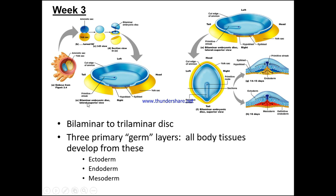Here we can see the bilaminar embryonic disc in a lateral-to-superior view. You can see the primitive streak, the hypoblast and the epiblast, the region of the head cranially, and the tail caudally, along with the yolk sac. From the overview, looking from above, we can see the primitive streak, the primitive node, and we're going to start to consider how we go from bilaminar to trilaminar positioning.